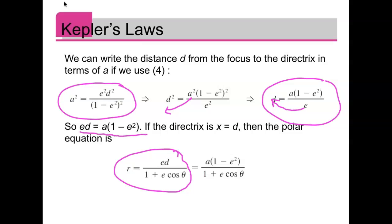And then we're just going to replace this ed in the numerator with the a times 1 minus e squared. And again, that's just helpful for us because in an ellipse, a is the distance from the center of the ellipse to the major axis vertex. And so that just puts a in the equation for us to be able to quickly identify how long the major axis is.